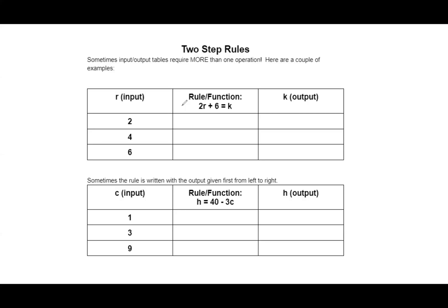All right, welcome back. Today we're going to take a look at some two-step rules involving input-output tables because sometimes input-output tables require more than one operation. Here are a couple of examples, and they've given us R, our input, and they've designated the output with the letter K.